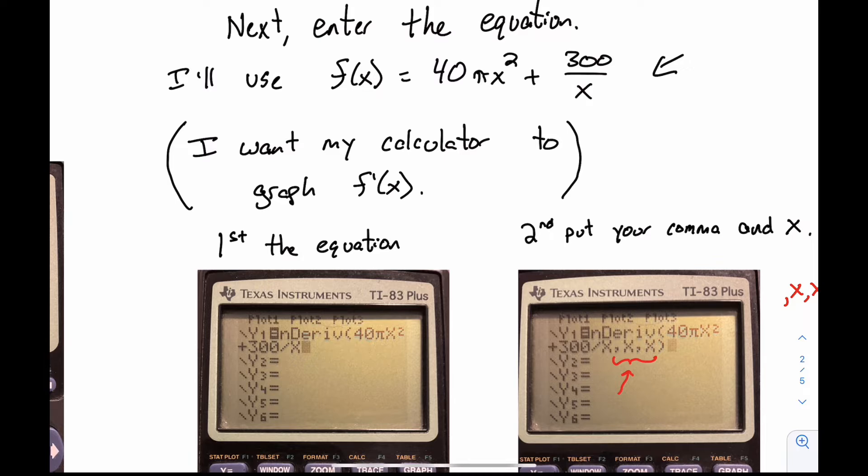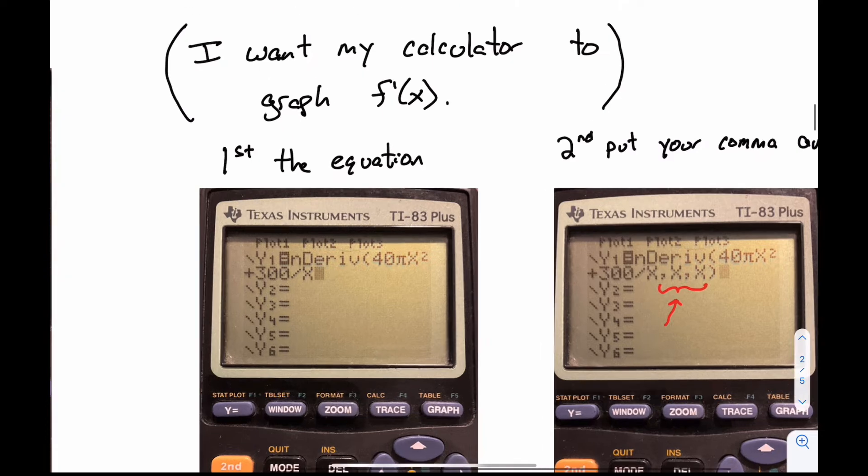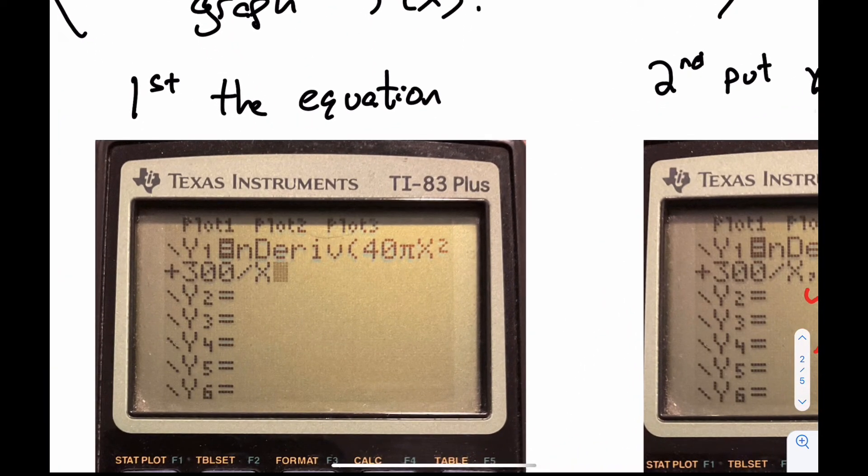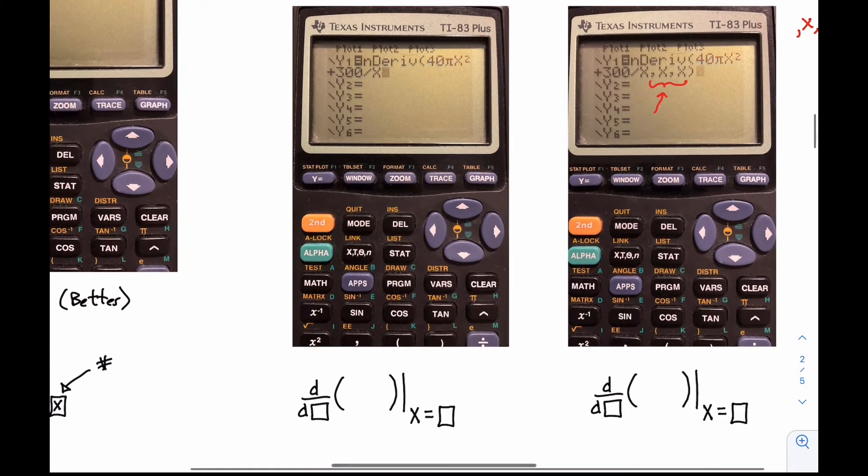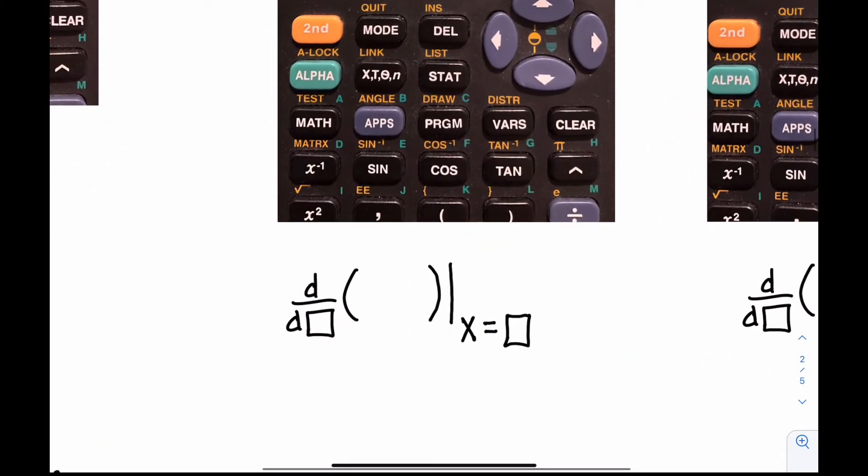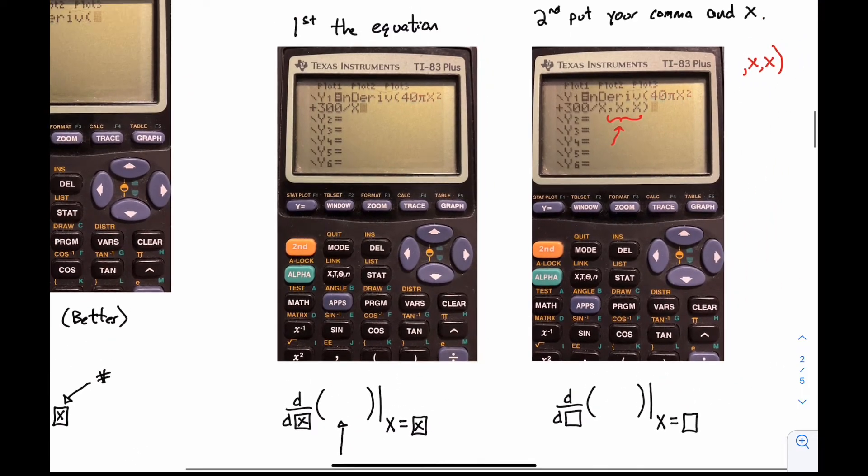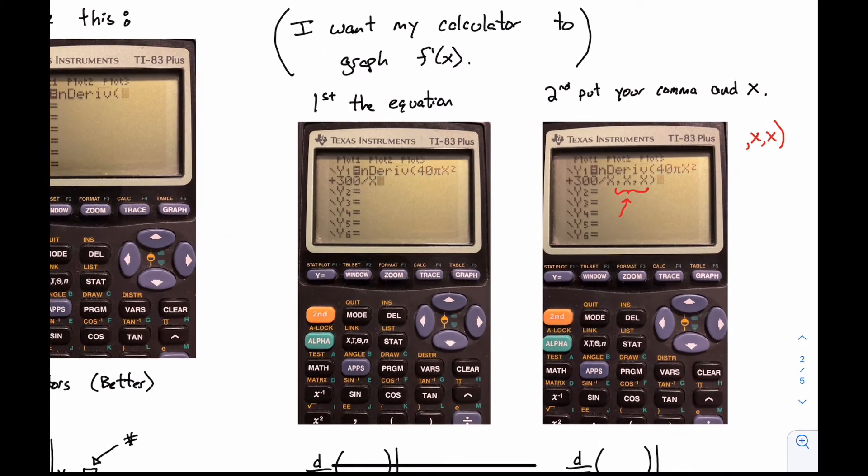So it's going to find the derivative and graph it. And so what I do is, after n-derive, I put 40πx² + 300/x. There's more I need to type in there. So that's where, in the newer calculators, you would plug all that in right there. And you would have already had x here and x here. So you're just plugging in the function there. And if you have a TI-83, you'll need to do this step too. If you have a newer one, you won't have to.